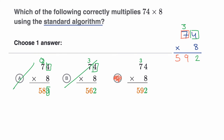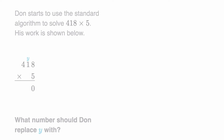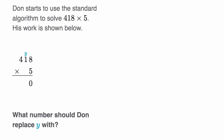Let's do another example. This is a different type of question. We're told that Don starts to use the standard algorithm to solve 418 times five, and his work is shown below. What number should Don replace y with? Pause this video and see if you can figure it out.